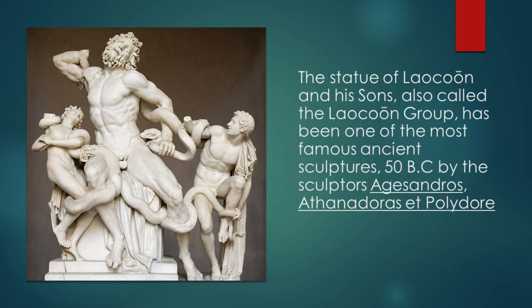The statue of Laocoon and his sons, also called the Laocoon Group, has been one of the most famous ancient sculptures, created around 50 BC by the sculptors Agessandros, Atenodoras, and Polidori. The craftsmanship is remarkable — imagine that during the ancient period, sculptures of such quality were already being created.